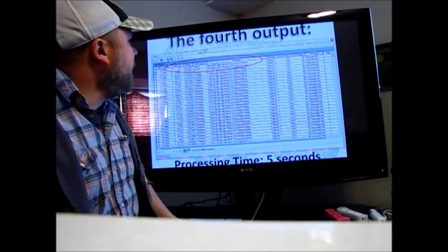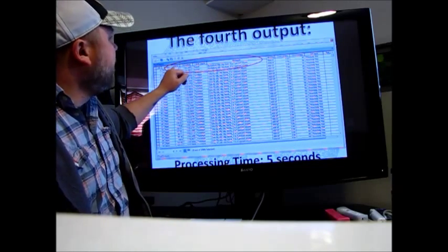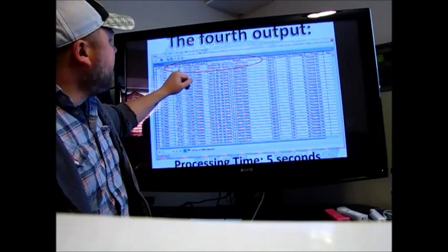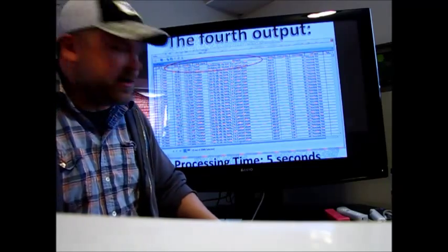The fourth output here will have a table then that has yield, elevation, your land class category, and the type of soil that it's on.